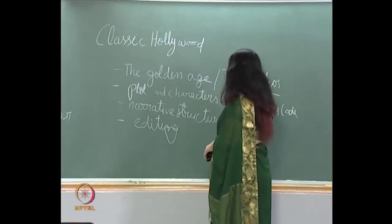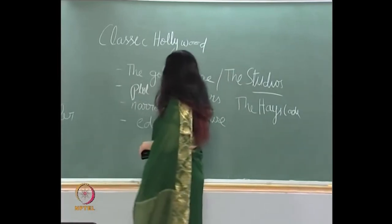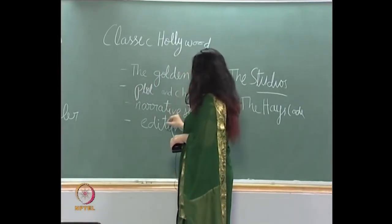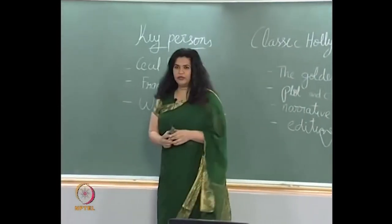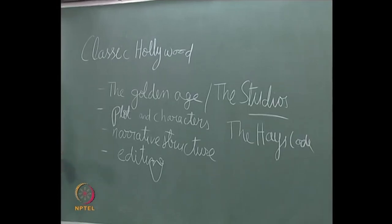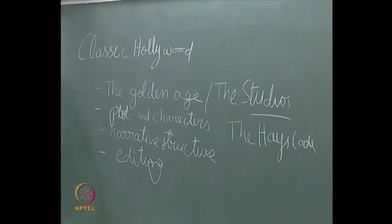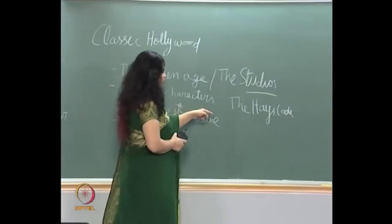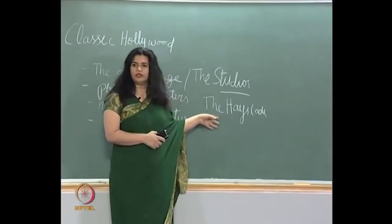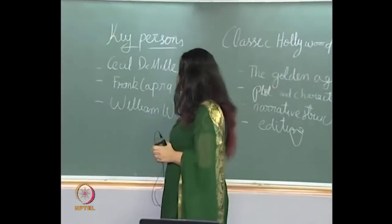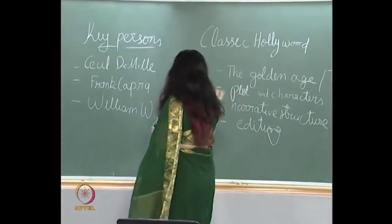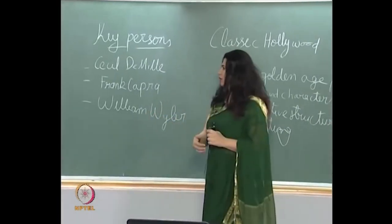We will also be talking about the studio system in Hollywood, and while talking about the golden age and classic Hollywood, we will talk about plot and characterization in the movies of that period. Narrative structure has already been given plenty of emphasis, so you are no stranger to that, and editing techniques. We will also talk about censorship code called the Hays Code, which was also popularly called the production code during the classic Hollywood period, and we will look at what brought about this code.